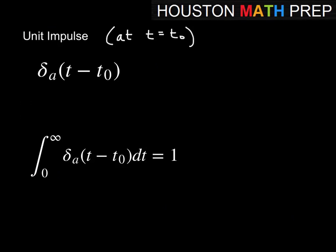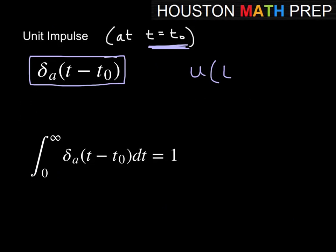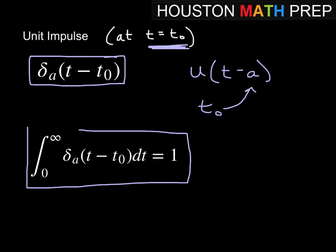We'll look at unit impulse at some value of T — specifically at T equals T₀. Our expression is delta sub A of T minus T₀. Similar to the unit step function with T minus A, our T₀ simply shifts the infinite spike to that value. A key property — why this is called unit impulse — is that the integral from 0 to infinity of this function equals 1, so the impulse is 1 unit.